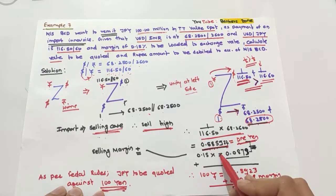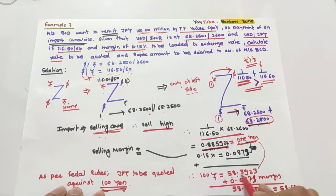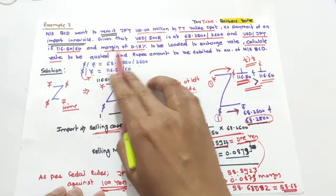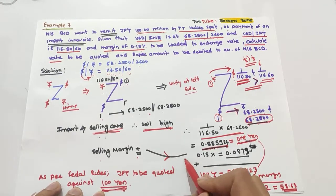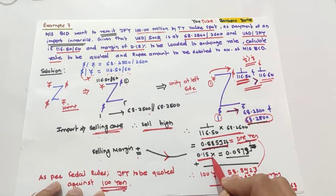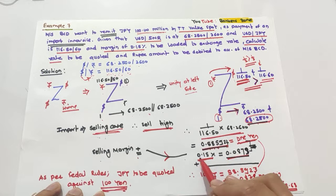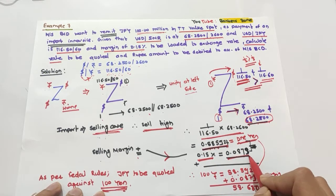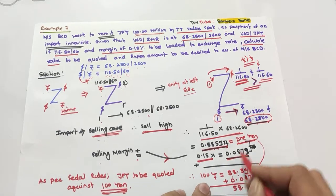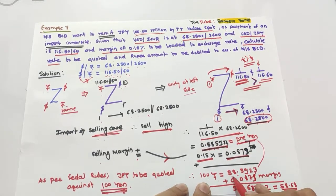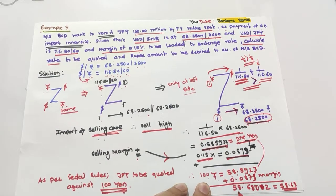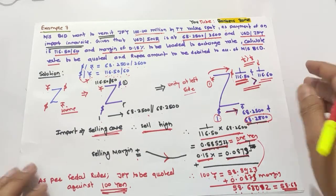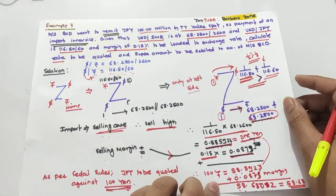Multiplying by 100, the rate for 100 yen becomes 58.5923 rupees. The margin is 0.15%, and since the case is selling, we add the margin. 0.15% of 58.5923 equals 0.0879. Adding the margin: 58.5923 + 0.0879 = 58.6802, which is approximately 58.68.